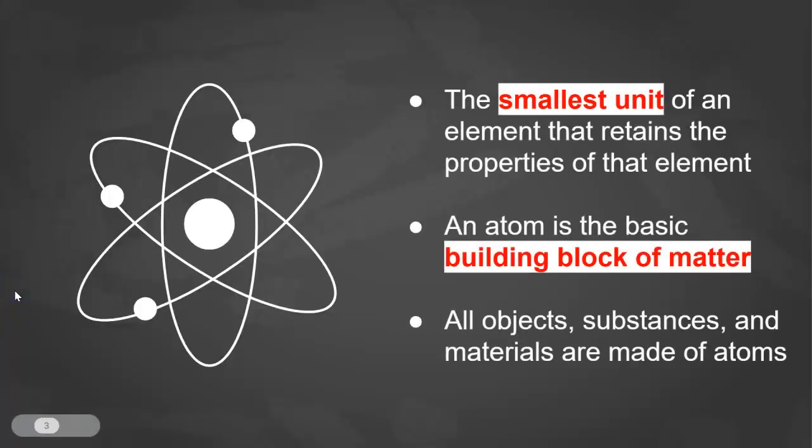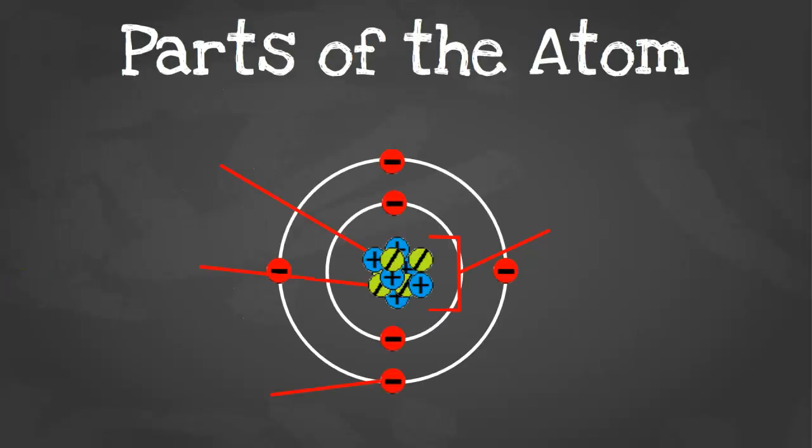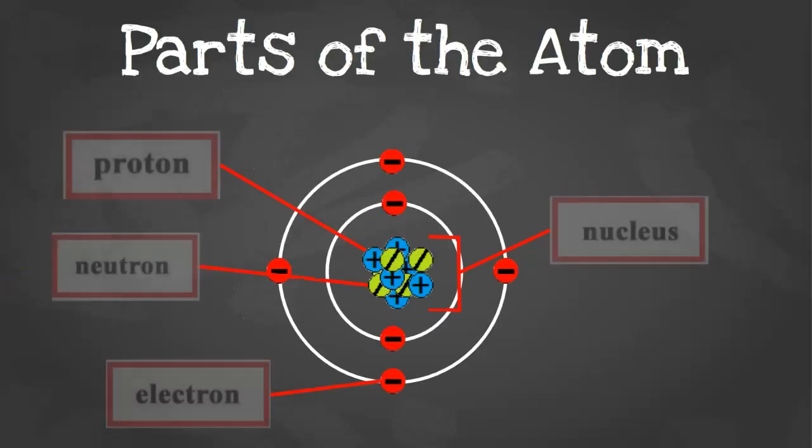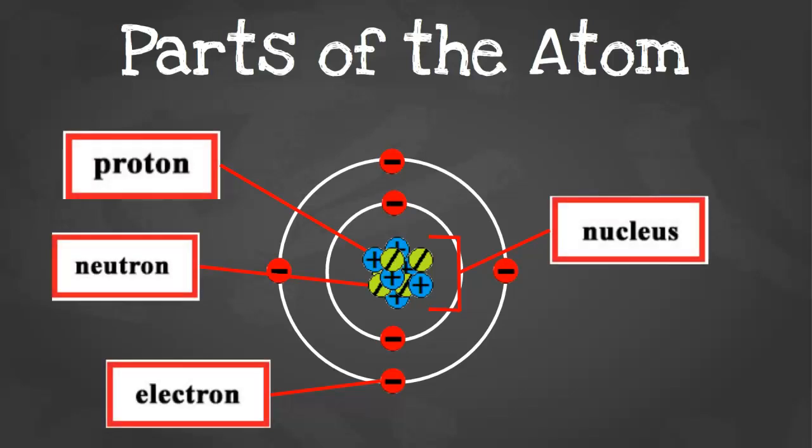An atom is the smallest unit of an element that retains the properties of that element. An atom is the basic building blocks of matter, meaning that all objects, substances, and materials are made of atoms. An atom is made of three subatomic particles: protons, neutrons, and electrons.